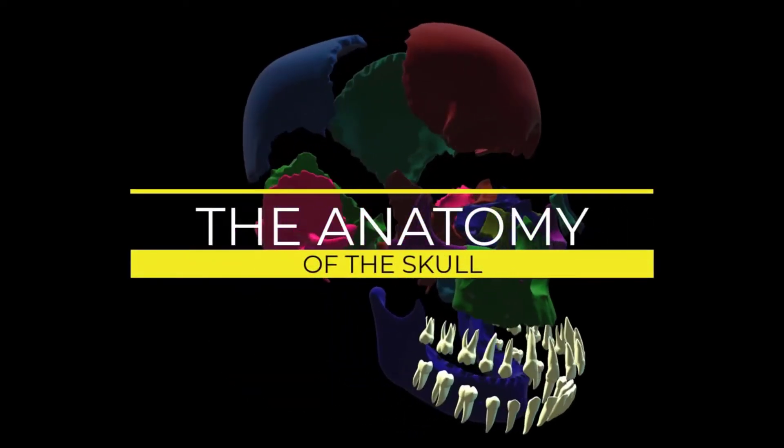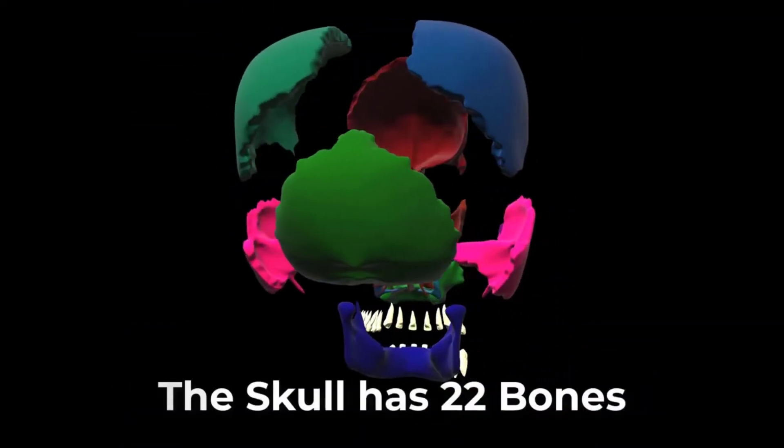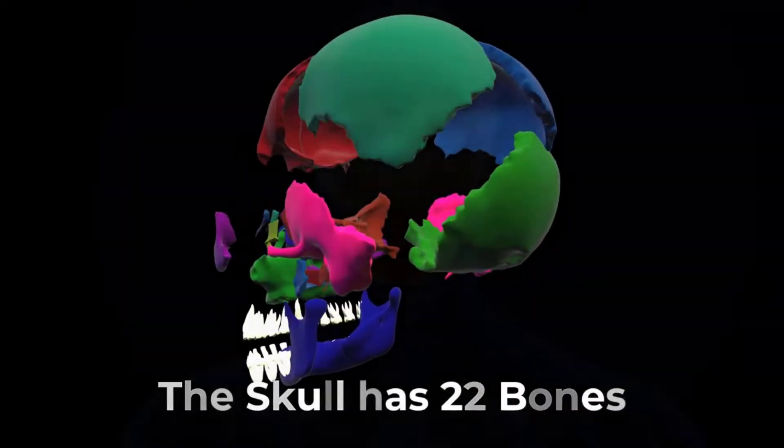The Anatomy of the Skull. In the adult, the skull consists of 22 individual bones.